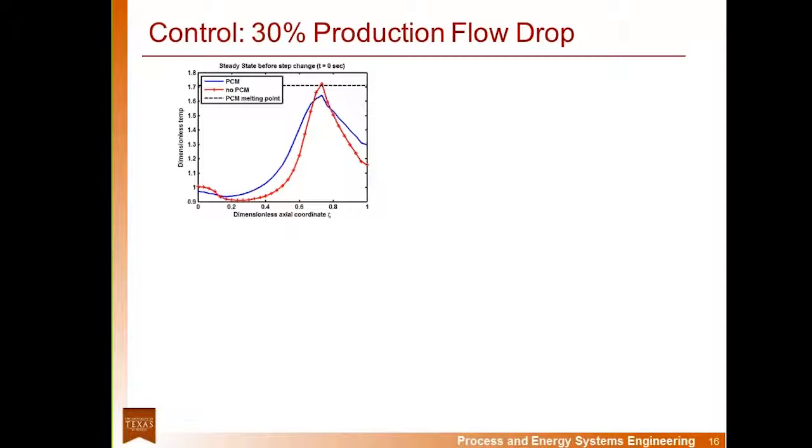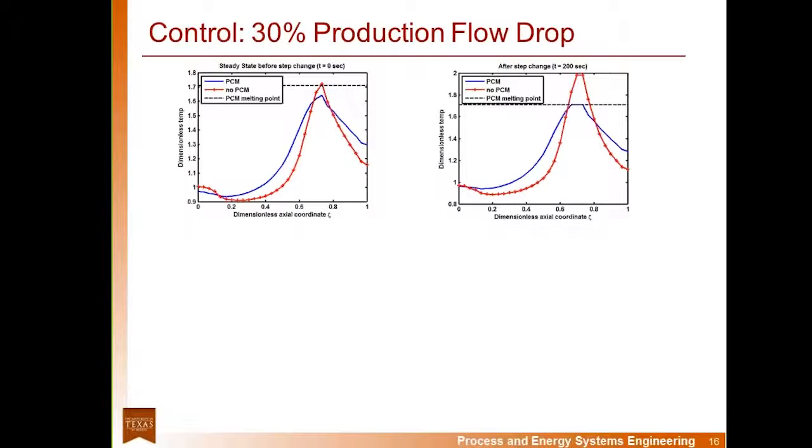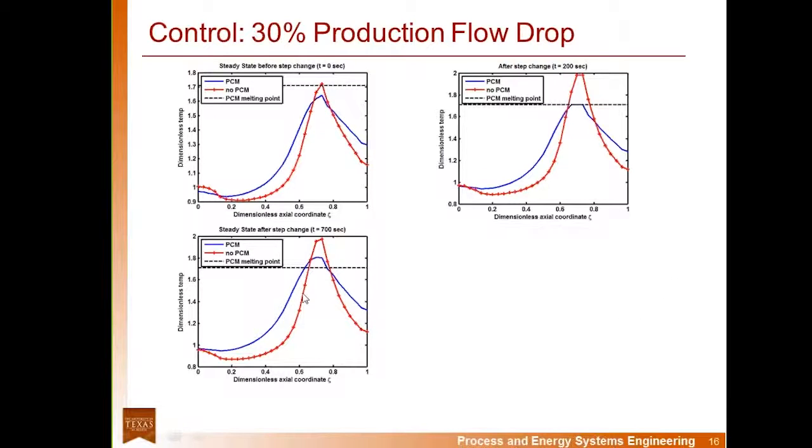This graph shows the temperature profile at steady-state for the two reactors with the phase change material infused reactor in blue and the base case reactor in red. Now we'll simulate a drop in the reforming flow rate to observe the impact of the disturbance on the reactor. When the flow rate drops, the temperature in the reactors rises, as expected. And in the base case, we see a quick rise to temperatures that could be potentially harmful. However, in the PCM reactor, the temperature rises only to the melting point, and it stays constant there. Now, after 700 seconds, we see that the phase change material layer has completely melted through, and temperatures continue to rise to their new steady state.